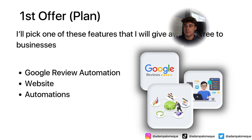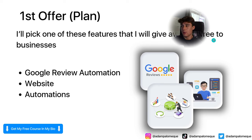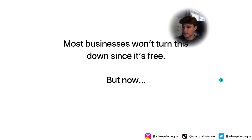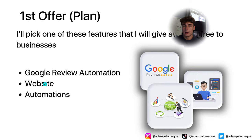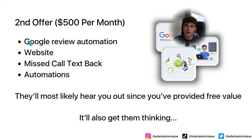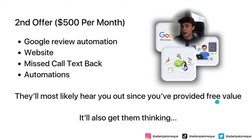Here's how I price my SaaS so I become irreplaceable as well. The first offer I'll do is pick one feature to give away for free to the business — this could be Google review automation, a website, or any other type of automation. Most businesses will turn this down because it's free, but then we'll offer them a second offer of $500 per month where they get Google review automation, website, missed call text back automation. You offer one of these as the thing they'll pay for. Maybe if you offer them a website, that website will shine light on the new issue they have — because if they now have a website but no reviews, no one's going to go onto that website.